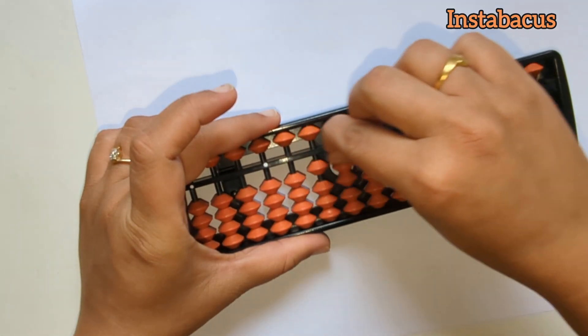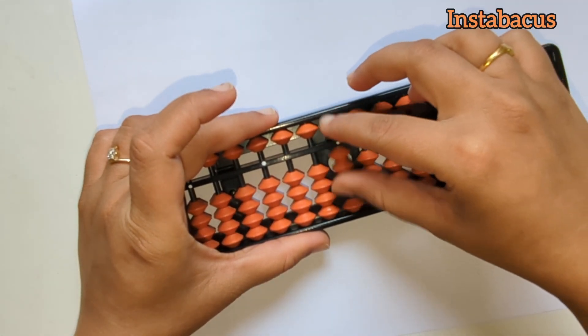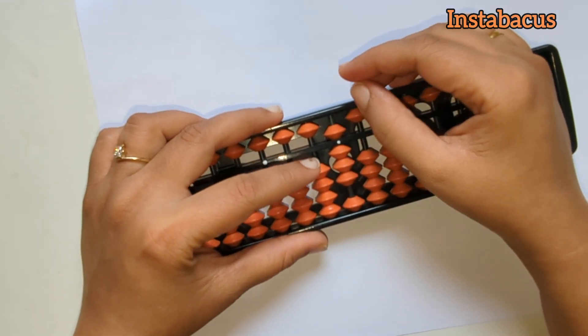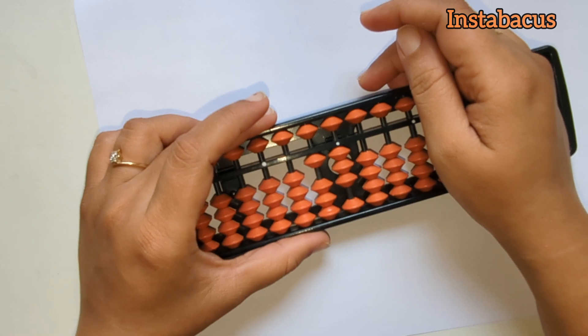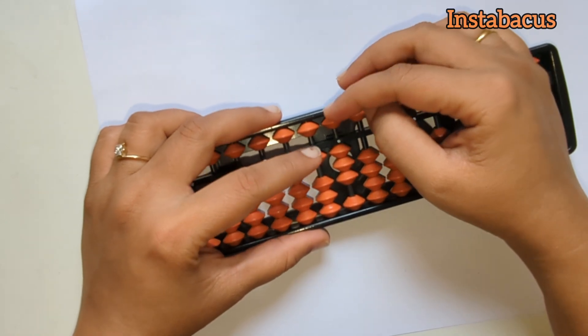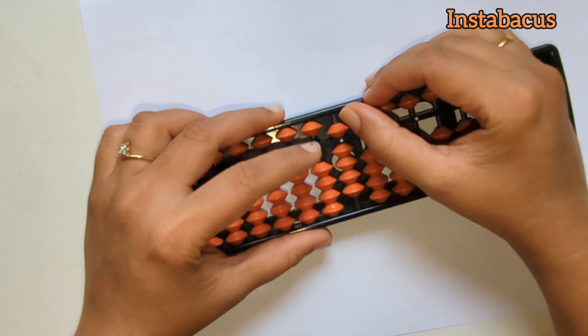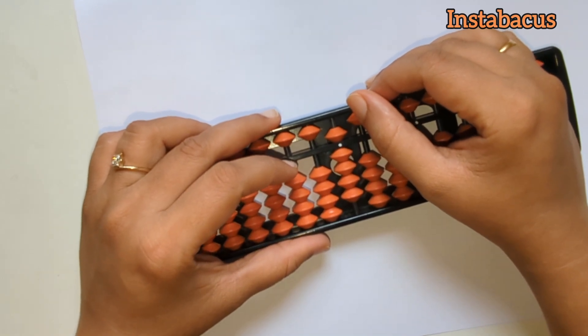Next one. This is eight on our abacus. To add five to this we are going to do something like this. So five plus eight is thirteen.